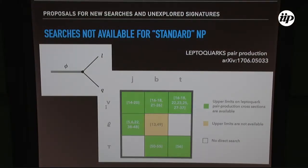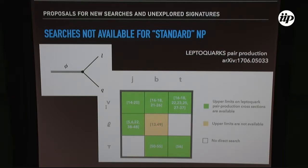Leptoquarks are motivated in some beyond standard model scenarios. In this paper, put on the archive quite recently, they look at what are the possible final states once you produce a leptoquark. The process is: leptoquark decays into a lepton and a quark. Although we are covering most possibilities — the green regions here correspond to two-body states which are experimentally covered, such as neutrino jets, neutrino bottom, neutrino top — we still have some possibilities, like these blank and yellow regions here, which have no dedicated searches. For completeness, it would be nice to cover this model parameter space completely.